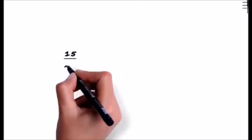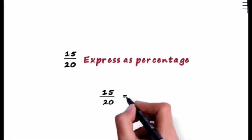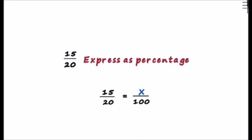Suppose we want to express 15 by 20 as a percentage. We know that if we have to express something as a percentage, we have to make its denominator equal to 100. So 15 by 20 should equal to some number x by 100. To find the percentage, we just have to find what this x is.